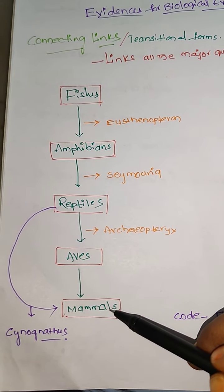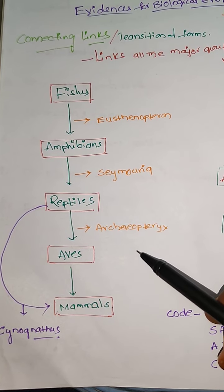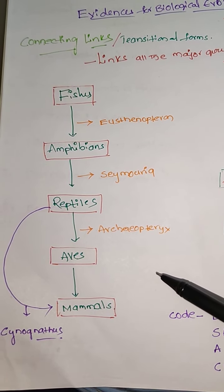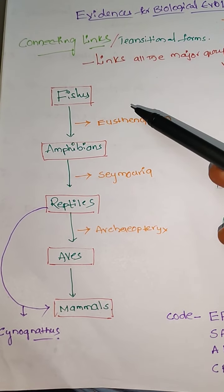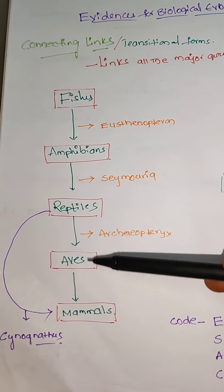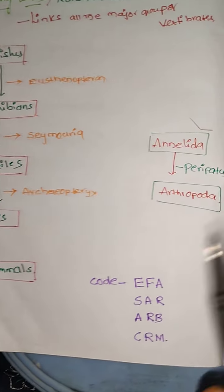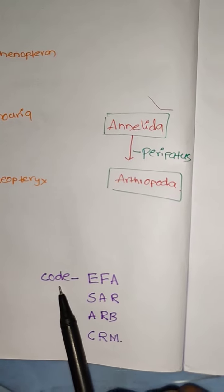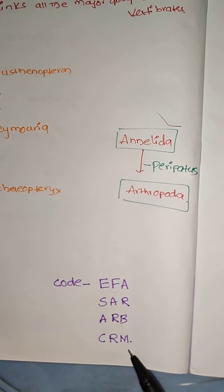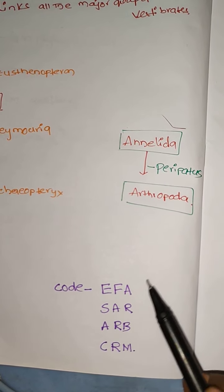Why? Because here they may ask the question in the form of statement, in the form of match the following and pick the odd one out. Be careful which connecting link between which vertebrate. It is very important. Make a note here. Here I came with a code. With the help of this code, you never miss the bit from MZET or NEET.